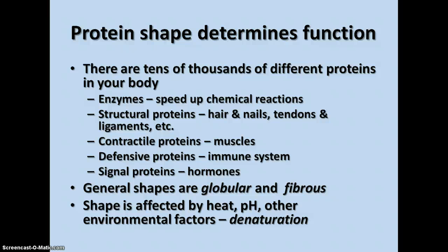There are contractile proteins, such as those found in your muscles. There are defensive proteins, such as those found in your immune system, and there are signal proteins like hormones. There are hundreds of different kinds of each type, used in various places in your body to do different jobs.